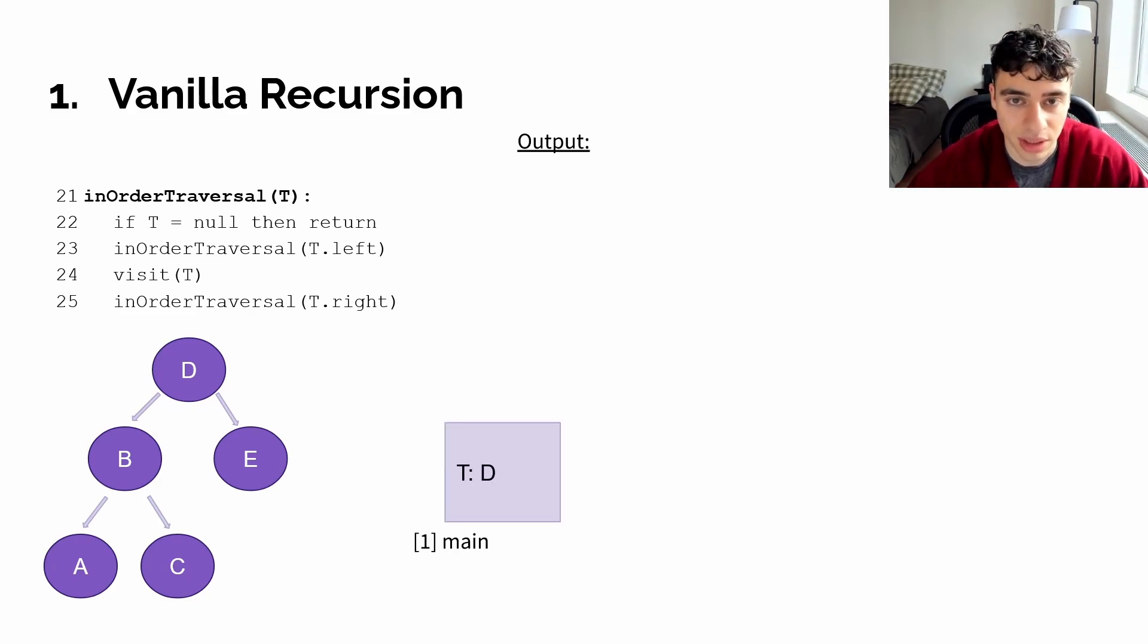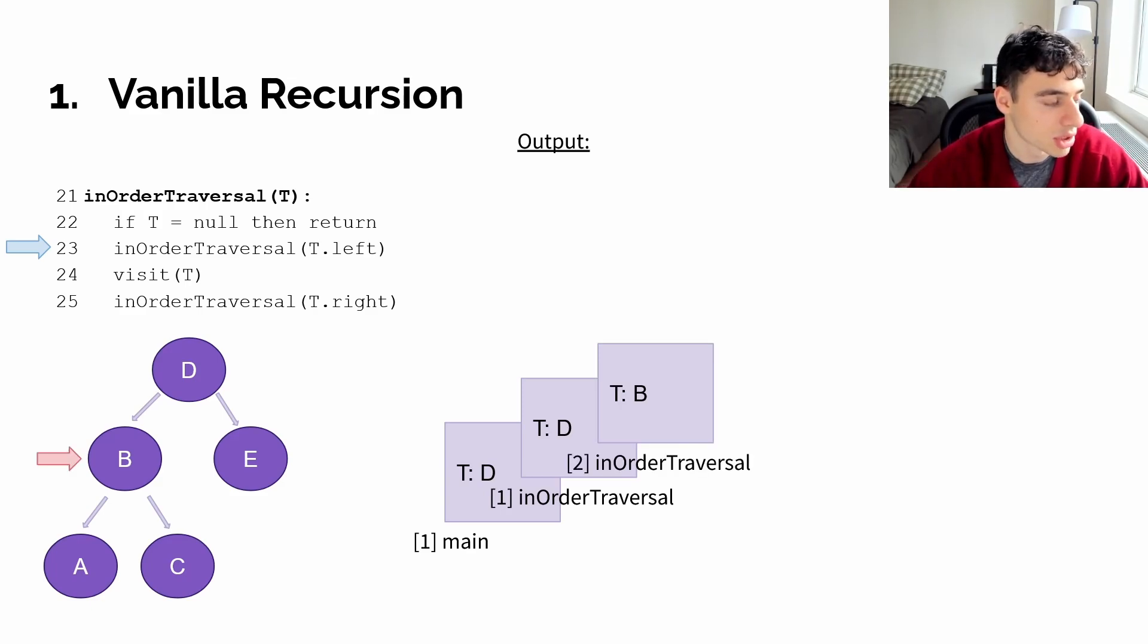And let's take a look at what the stack frame looks like with in-order traversal, which uses vanilla recursion. So let's start with our main method. Let's say that the in-order traversal method is called from within some main routine. That main routine will open one stack frame for in-order traversal. This is our first stack frame for the in-order traversal method, so I'd call it stack one in brackets. First, we have to move leftwards down the tree, so we open another stack frame for in-order traversal, and our T in this case is B.